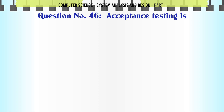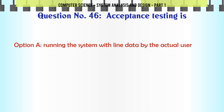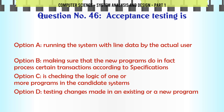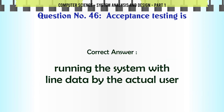Acceptance testing is: A. Running the system with live data by the actual user. B. Making sure that the new programs do in fact process certain transactions according to specifications. C. Checking the logic of one or more programs in the candidate systems. D. Testing changes made in an existing or a new program. The correct answer is: Running the system with live data by the actual user.